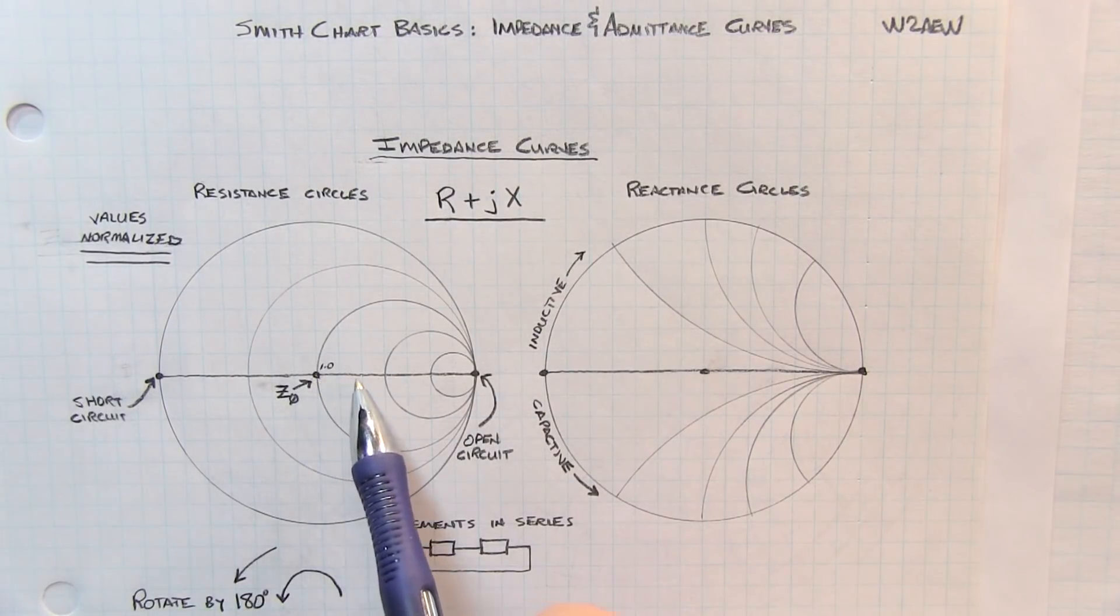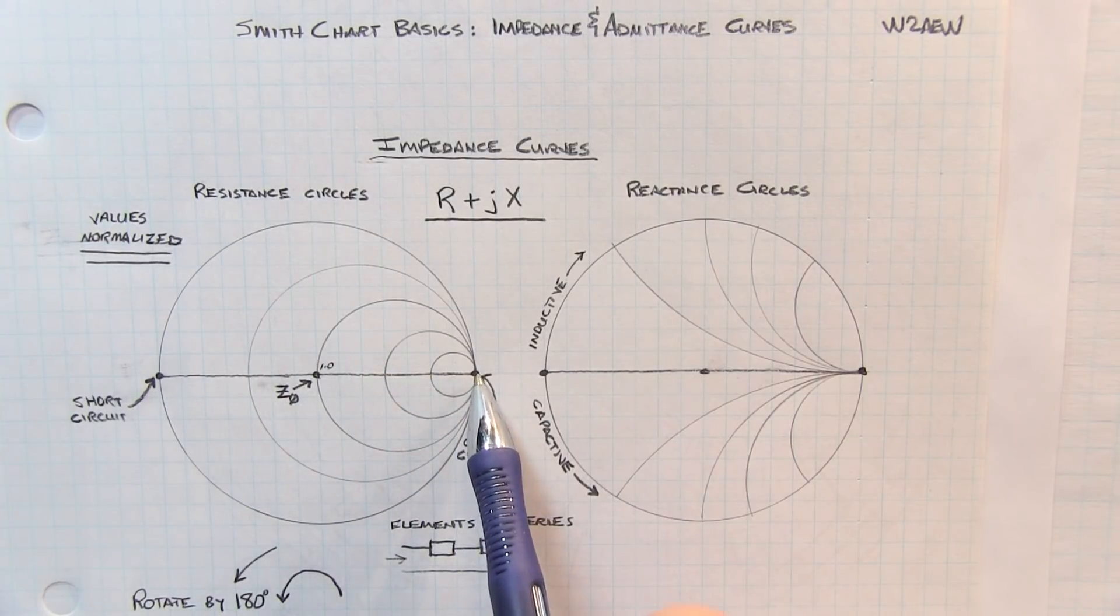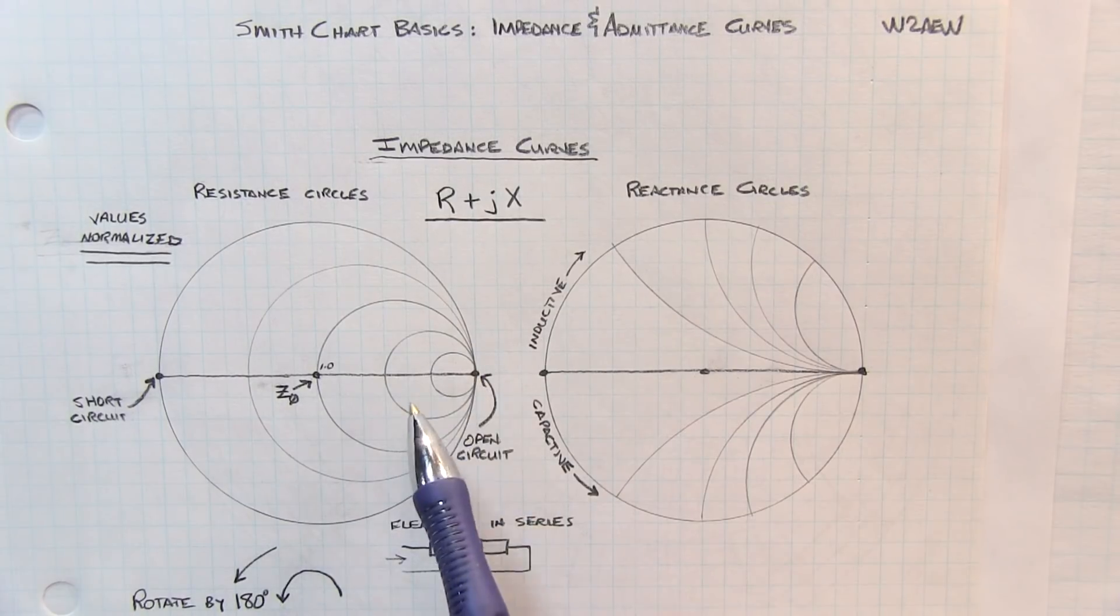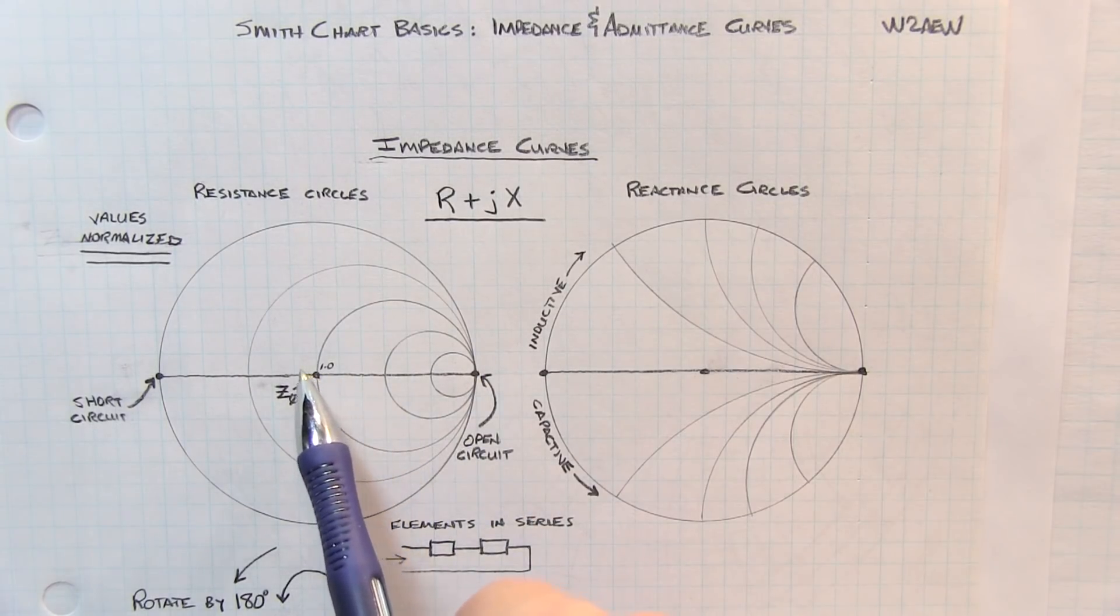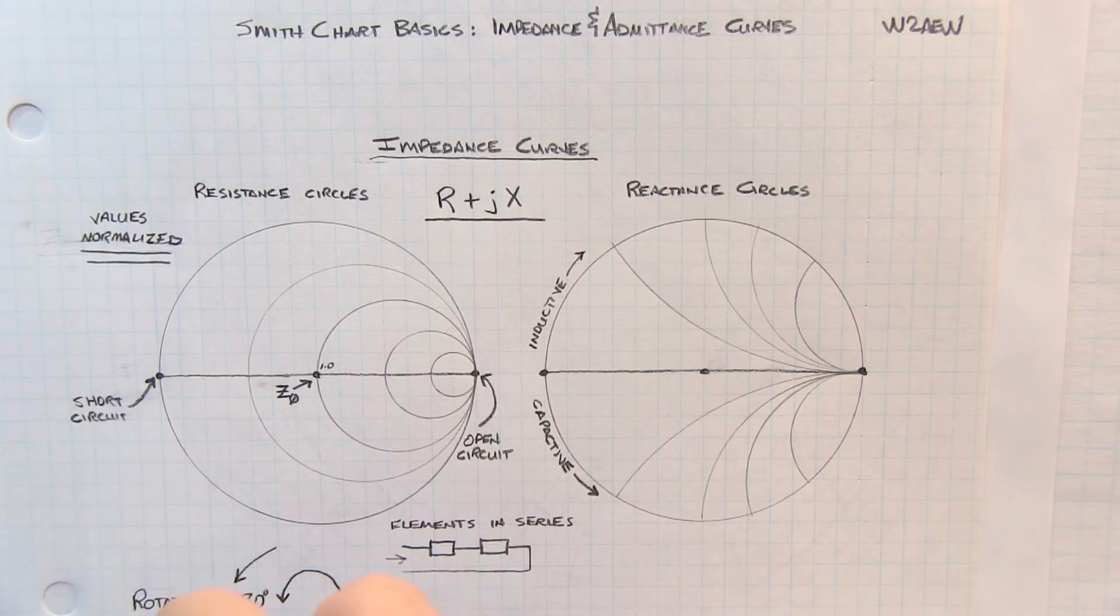As you move to the right along the baseline axis, you go higher and higher in resistance until you get all the way out to the outer circle, and that represents an infinite impedance or an open circuit. Conversely, as you move to the left, you'll get lower and lower real components until you get to a short circuit. A short circuit from an RF standpoint is represented at this location in the Smith chart, and an open circuit is represented here.